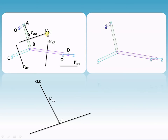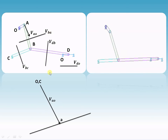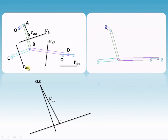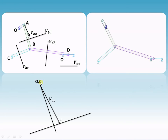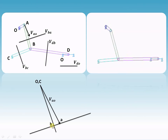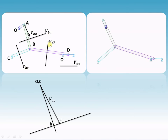The second vector is velocity of B with respect to A, whose magnitude and direction we don't know. Out of B and A, point A is known, so from A draw a line parallel to this vector. The next vector is velocity of B with respect to C; out of B and C, point C is known, so draw a line parallel to this vector from C. Wherever these two lines intersect, that will be point B — the intersection of V_BA and V_BC.